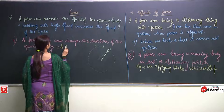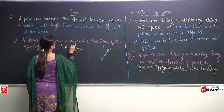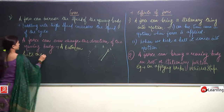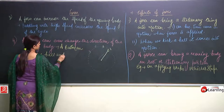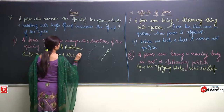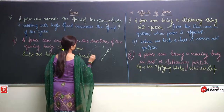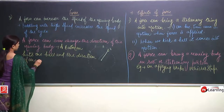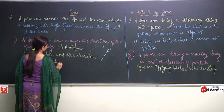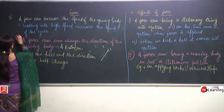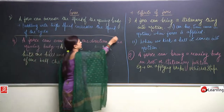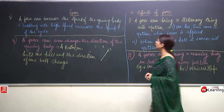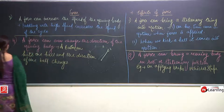A batsman hits the ball and the direction of the ball gets changed. This is our fourth point. Now we will talk about the fifth point.